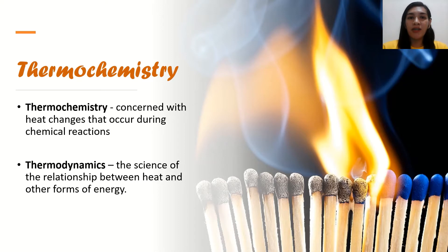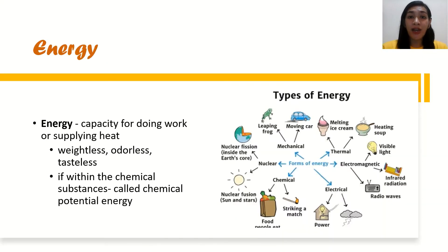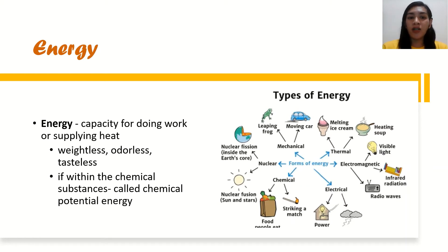Just a basic recap — let's have energy. Energy is a capacity for doing work and usually it is weightless, odorless, and tasteless. Energy is used for supplying heat and we have different types of energy as shown in our image. If the energy is within the chemical substances, then we call that chemical potential energy.